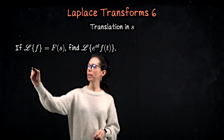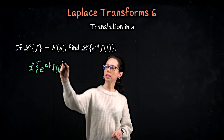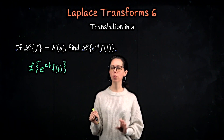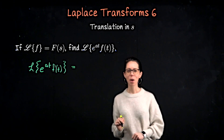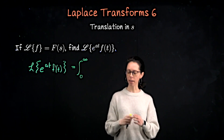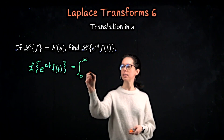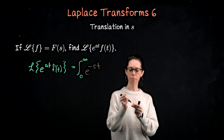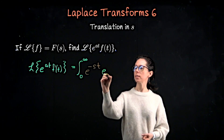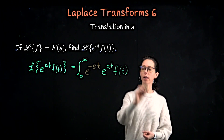What is the Laplace transform of e to the at times our starting function f of t? For this, we are going to go all the way back to the definition of the Laplace transform. This is defined as an improper integral from 0 to infinity of the function e to the negative st. That always makes an appearance in our definition of a Laplace transform. And then we multiply it by what we want to transform, which in this case is e to the at f of t, integrating with respect to t.